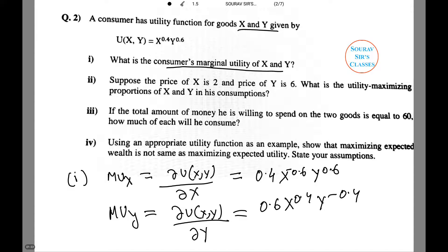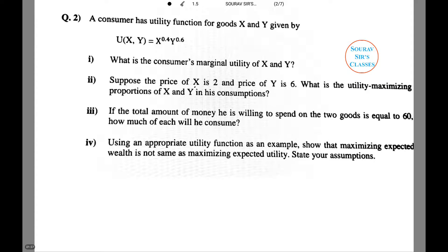I will clear the screen so I can do the further questions in the space below. Now suppose the price of X is 2 and price of Y is 6. What is the utility-maximizing proportion of X and Y in his consumption? From theory we know MU_X over P_X equals MU_Y over P_Y. This is the condition for equilibrium.